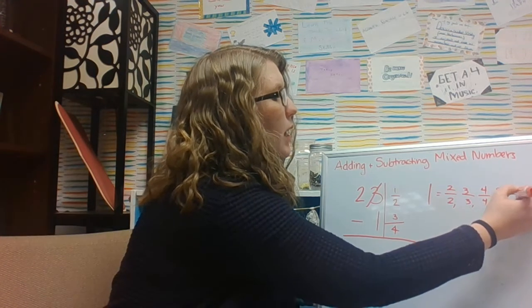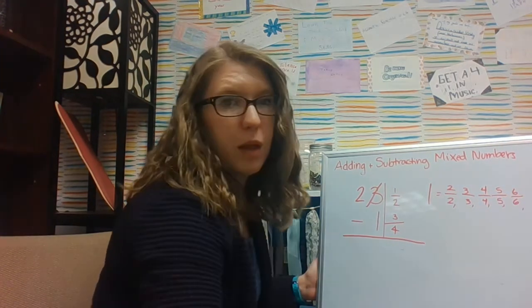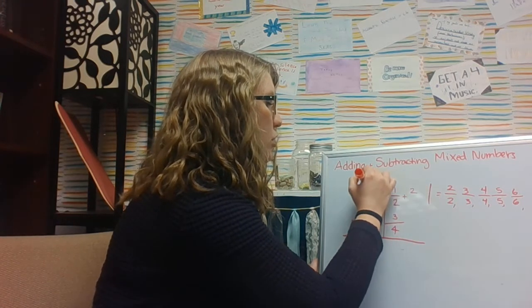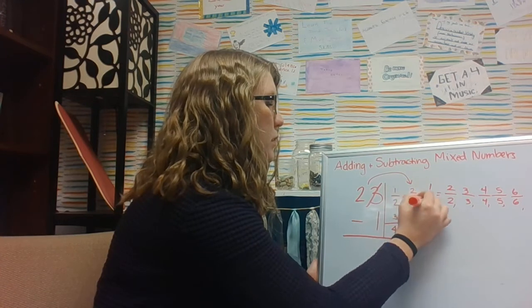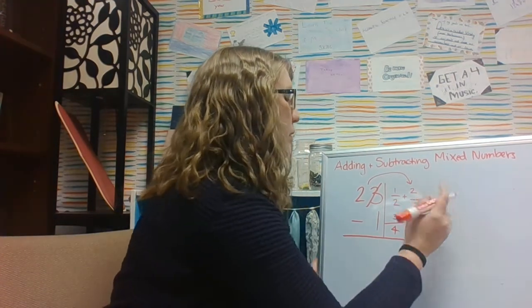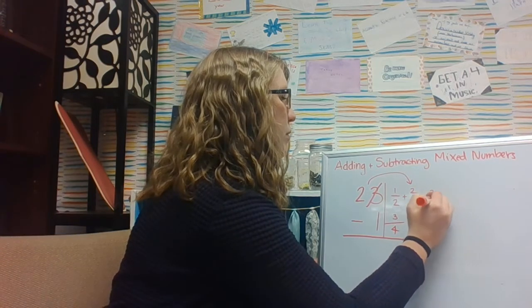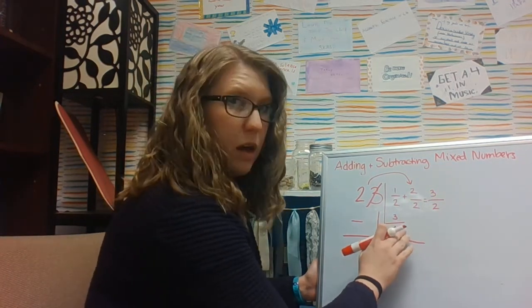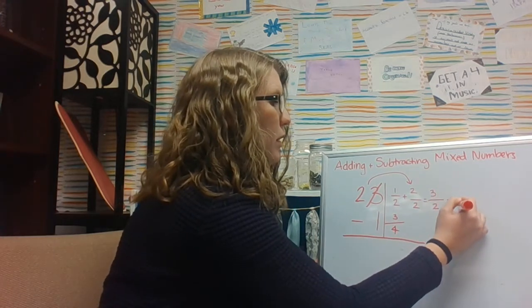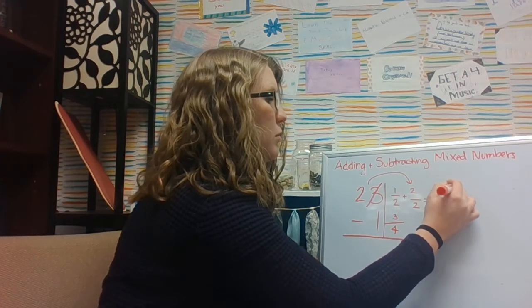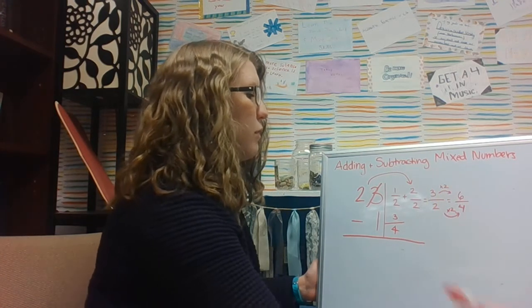So here, I can add and just shift this 1 to be a 2/2, in which case, this is now 3/2. That still doesn't give me a common denominator here. So I need to change that to fourths. 3 times 2 is 6. I now have 6/4.